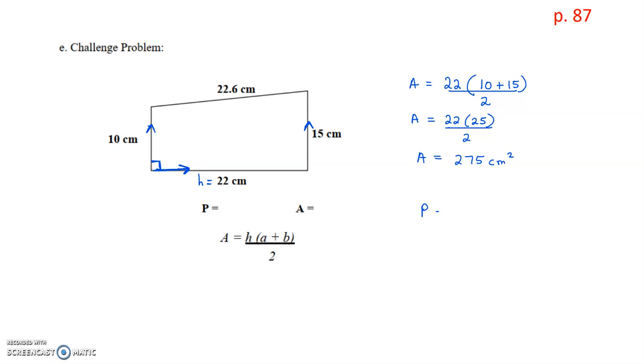For our perimeter, it's just a matter of adding all of our sides. So we're going to take that 10 plus 22 plus 15 plus 22.6. So we don't want to round unless they tell us to. So we're going to add those up, and we get a total of 69.6 centimeters. So remember, perimeter is in centimeters. It's the outside measurement. And area is in square centimeters. It's the inside measurement.